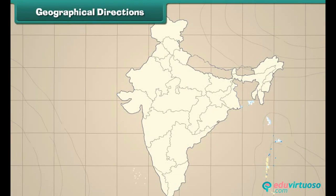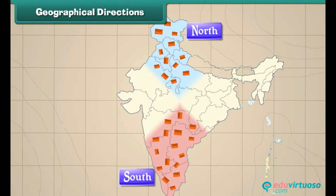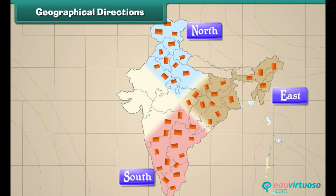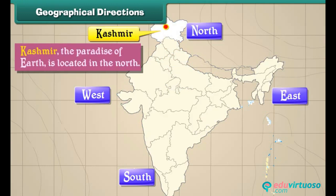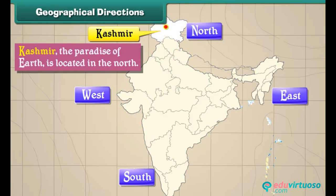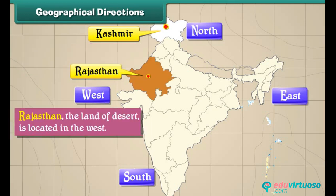People live at different places in India. Some places are in the north while some others are in the south. Some places are located on the east and some others are on the west. Kashmir, the paradise of earth, is located in the north. Rajasthan, the land of desert, is located in the west.